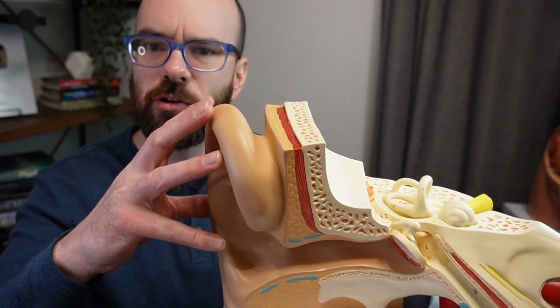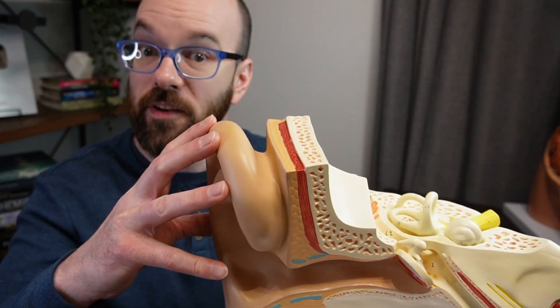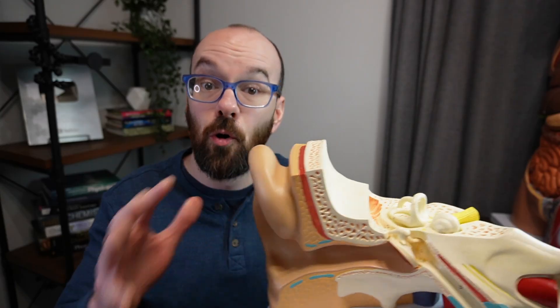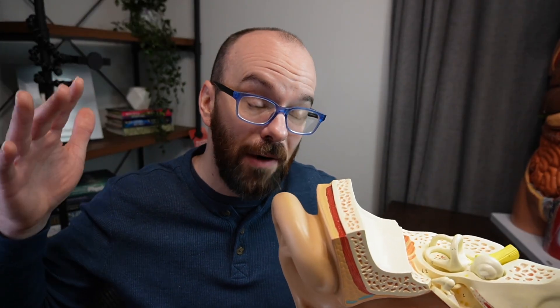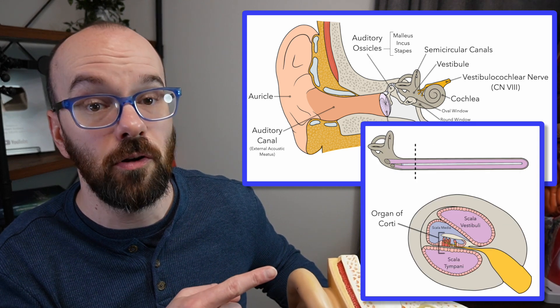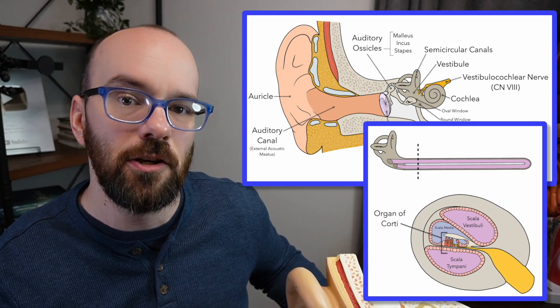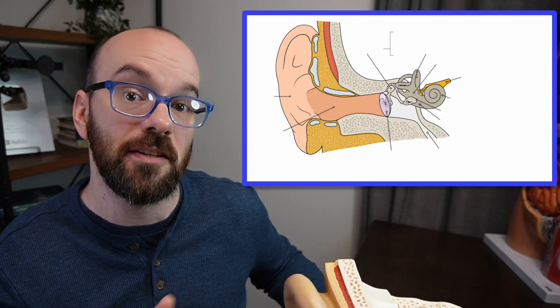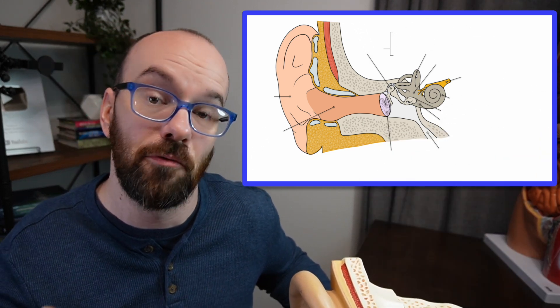In this video, we're going to learn the anatomy and physiology of the ear — not only the external ear that you see on the side of your head, but all the internal structures as well. The whole process of taking sound waves in the air around us and converting those into electrochemical signals that our brain can interpret the meaning of.